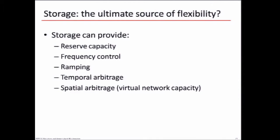Which brings me to storage. Storage is really the ultimate source of flexibility because it can provide reserve capacity — you can suddenly increase the output of your storage devices and inject megawatts into the grid. You can use it for frequency control, for dealing with all those little changes in the load. Storage is great for dealing with big ramps like those in California. You can do temporal arbitrage — charge when there's plenty of wind or sun and discharge when they go down — and spatial arbitrage, using storage at different locations in a grid to improve transmission capacity and avoid overloading transmission lines.